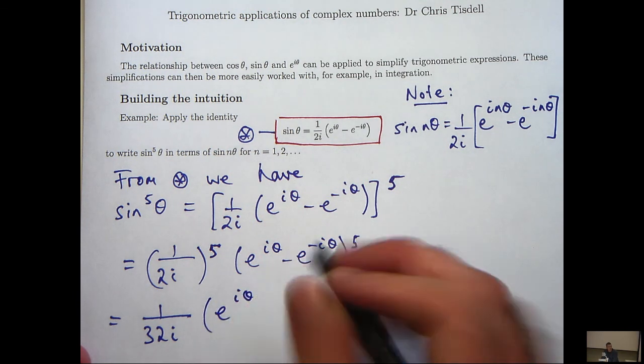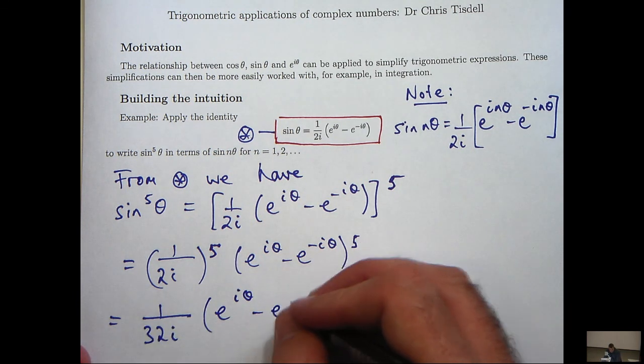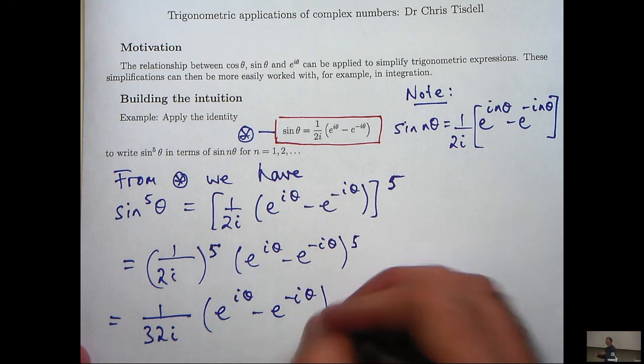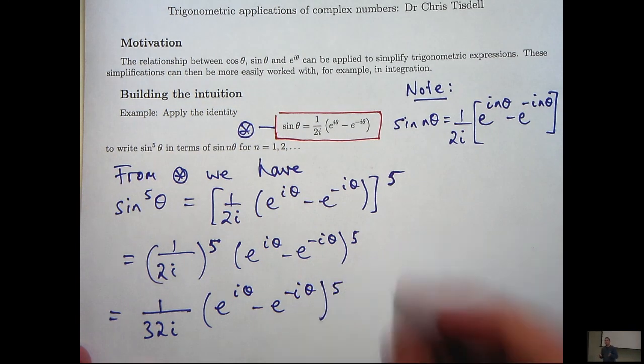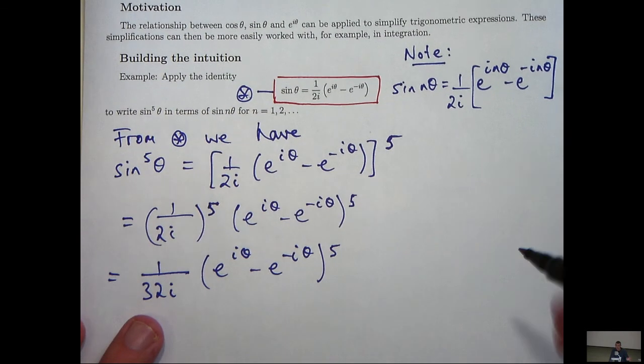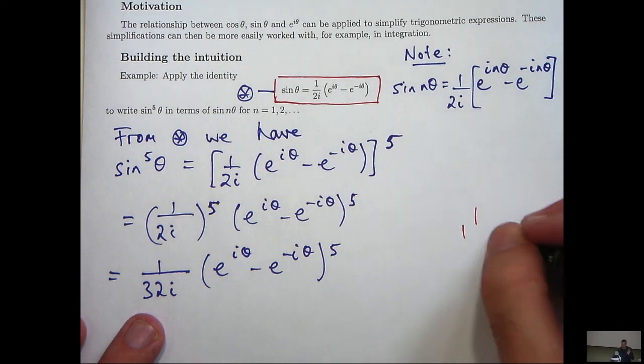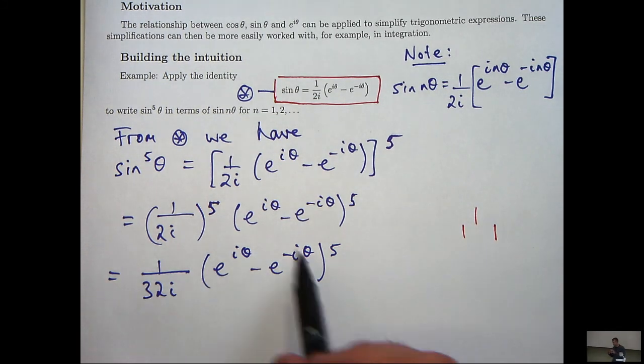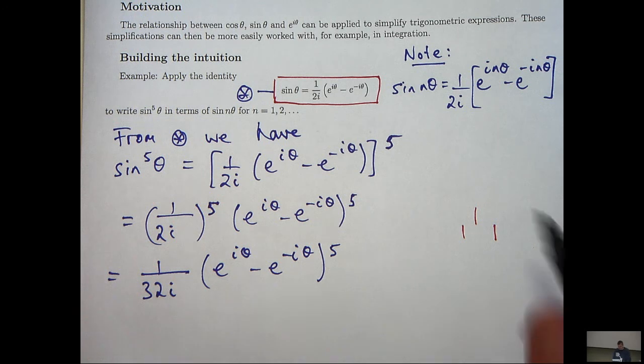Expanding this bracket is going to be a little bit more time consuming though. Now some of you may be able to expand this bracket straight out. If you can then that's great. If not, then a good way of determining what you need is Pascal's triangle. So Pascal's triangle just gives you the coefficients in the terms of this expansion.